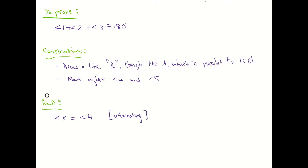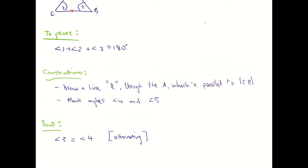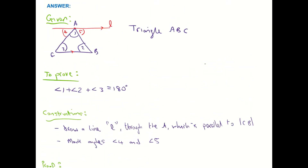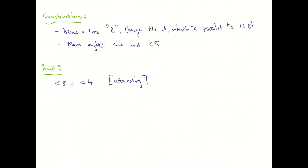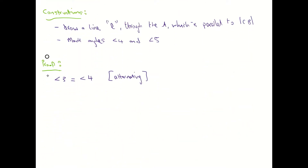Remember, the aim of the game here is that we have to show that angle 1, 2 and 3 add up to 180 degrees — we can't assume it, we have to prove it. The next thing I'm stating is that angle 2 is equal to angle 5, because again it is alternating — they are on the other side of the triangle.